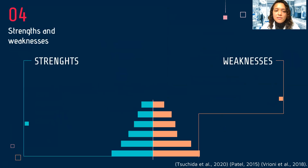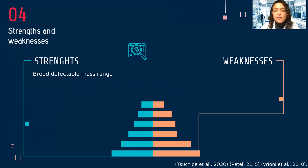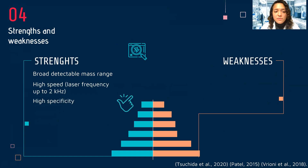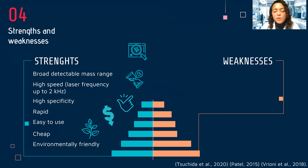The strengths and weaknesses: it has a broad detectable mass range, which is a huge strength — you can detect very small, very big, and different kinds of molecules. It has high speed, high specificity, and it's very rapid. It can take two minutes up to two hours depending on the sample complexity. It's easy to use, cheap, and environmentally friendly in comparison to current sequencing machines such as PCR.